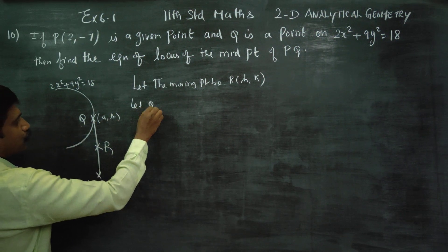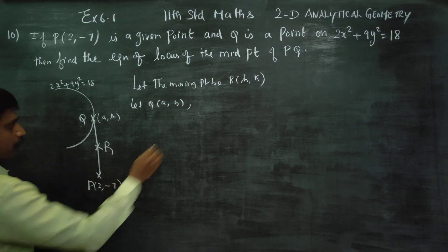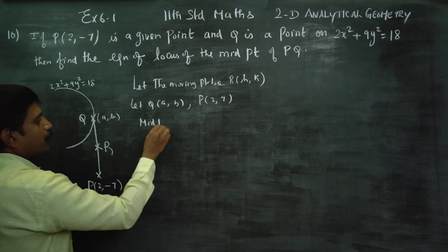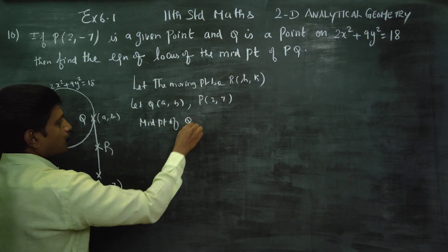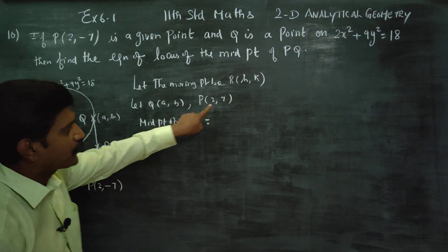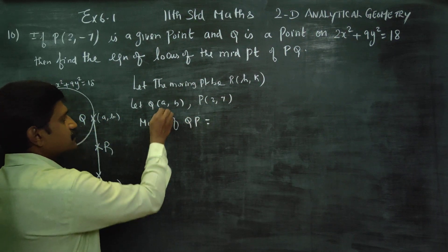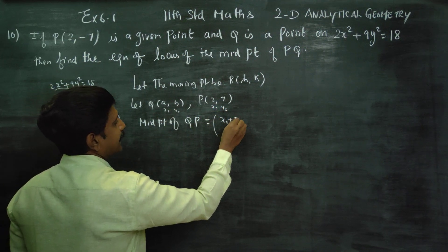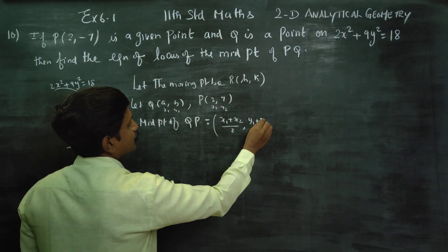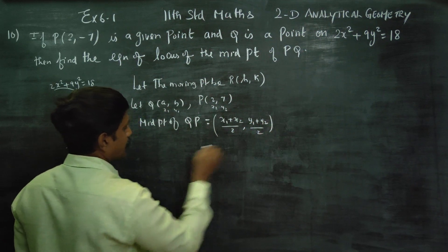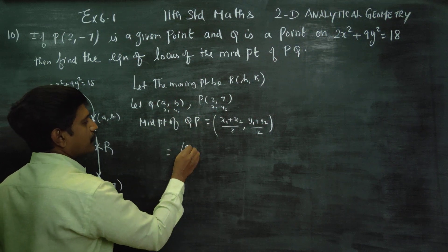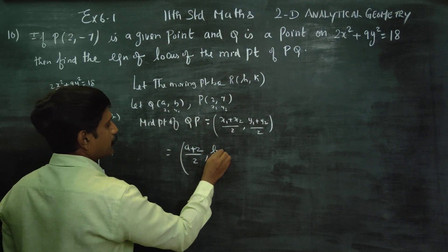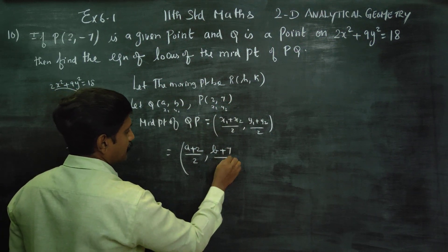Let Q be (a, b). P is the given point (2, -7). We need to find the midpoint of QP. This is my x1, y1 and this is my x2, y2. Midpoint formula: x1 plus x2 by 2, y1 plus y2 by 2 is our midpoint formula. So x1 = a, x2 = 2, divided by 2; y1 = b, y2 = -7, divided by 2.